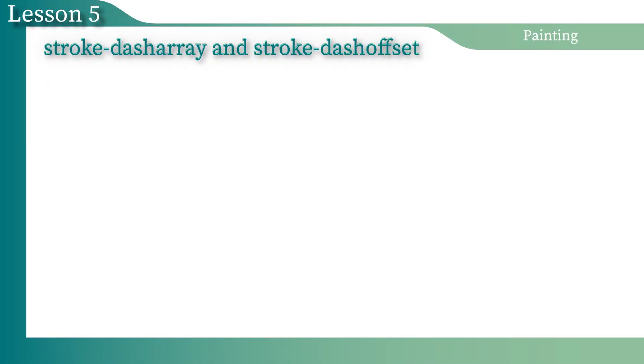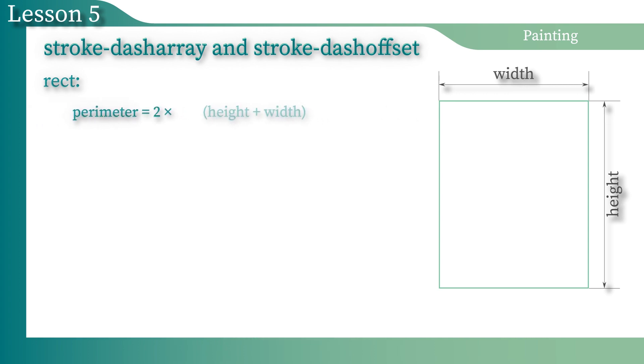If we have to apply the DashArray to a rectangle, then we can use the formula that calculates the perimeter of the rectangle. Then we should calculate the percentage values the same way as we did before.